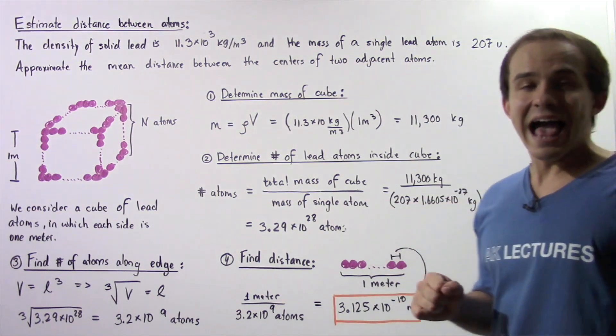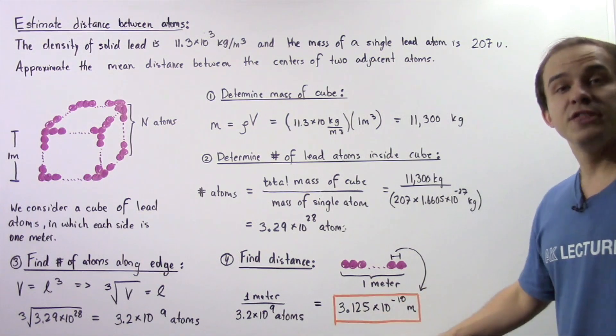that means the length or the diameter of a single atom is equal to the distance between the centers of any two adjacent atoms. And the distance is given by this quantity.